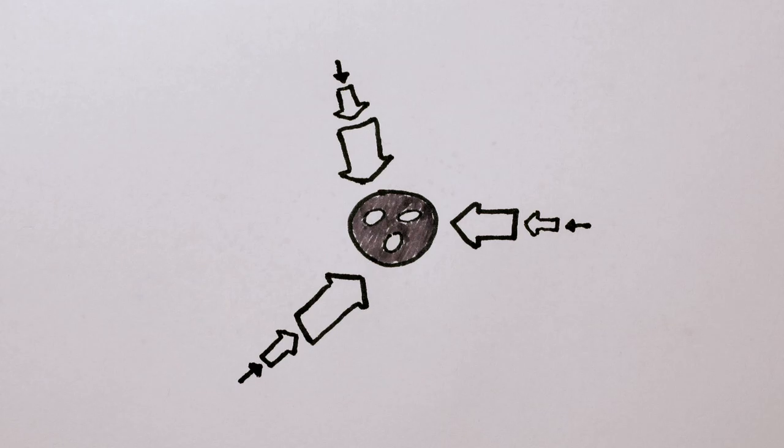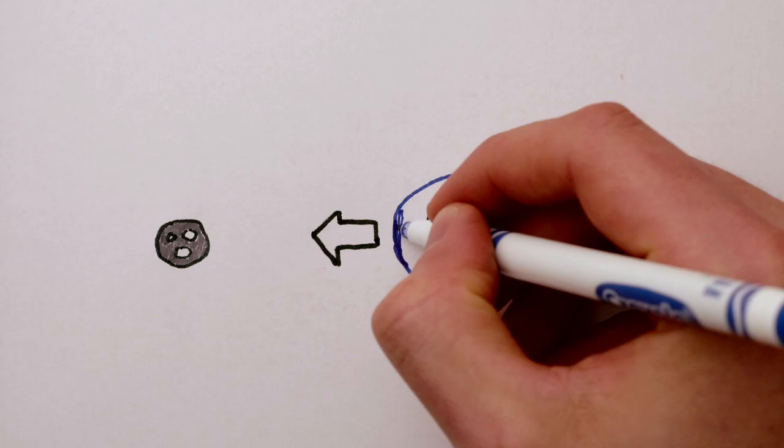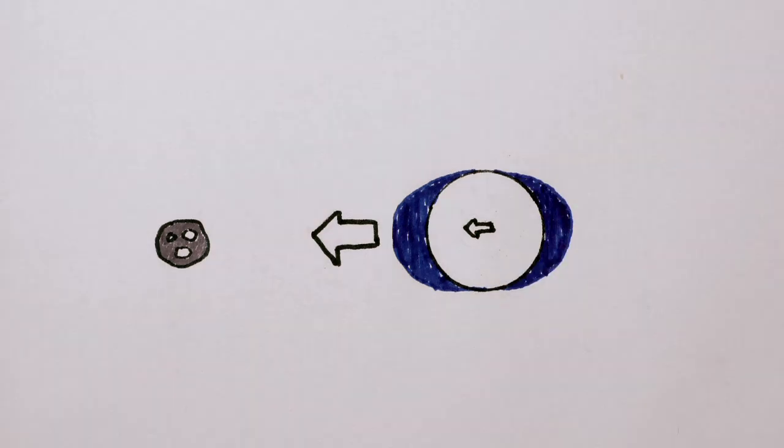Simple. The Moon's gravitational attraction is stronger the closer you are to it, so the close side of the Earth gets pulled away from the middle, which in turn gets pulled away from the far side.